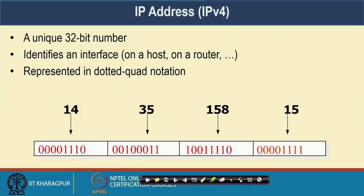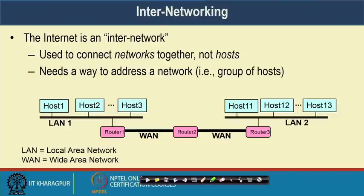The IP address uniquely identifies an interface on a host or on a router, represented in dotted quad notation. Everything in the system is represented in binary, so for example 143.0.158.15 is represented as its binary equivalent.